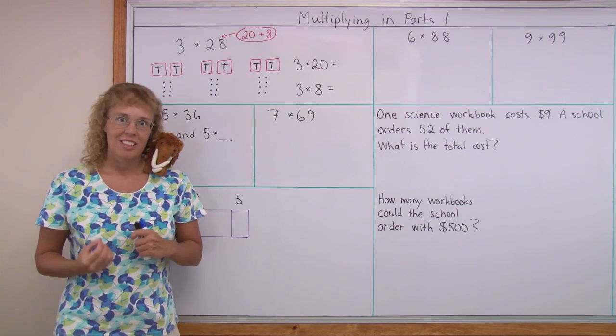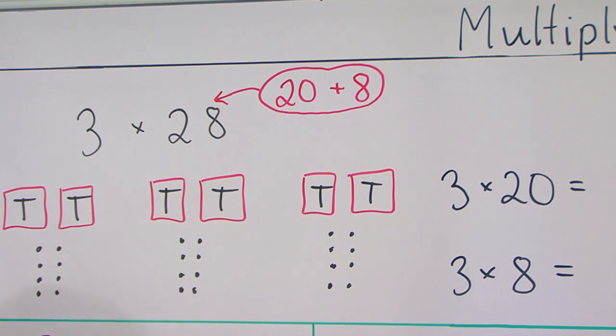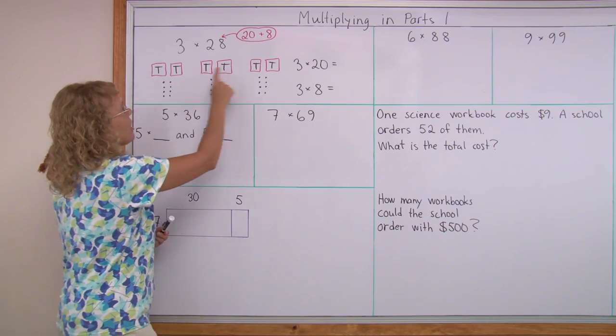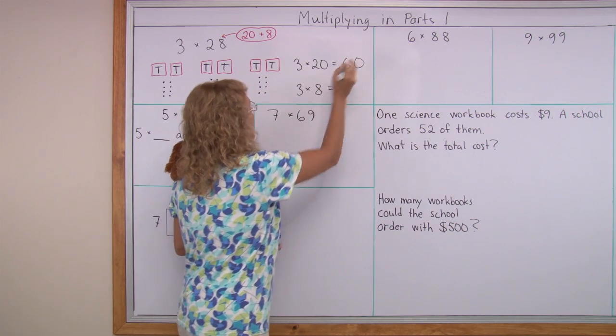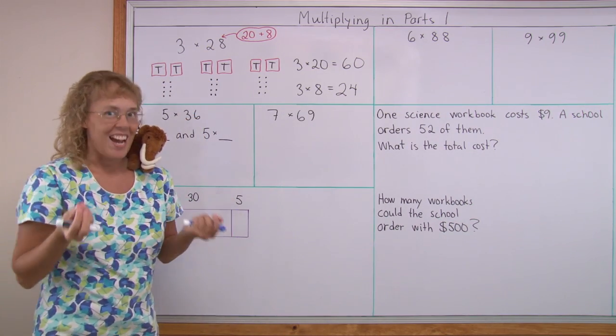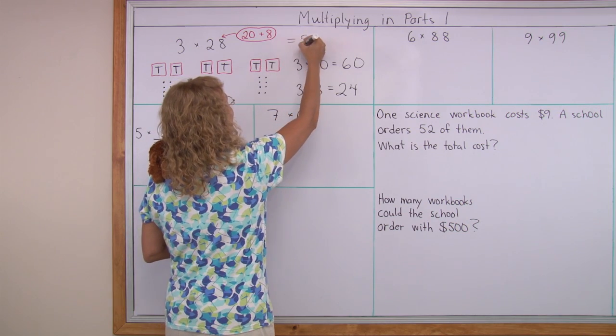The principle is actually very simple. Let's say we have 3 times 28. Think of 28 as being in two parts, 20 plus 8, and then we multiply those parts separately. We will multiply 3 times 20 and 3 times 8. As you see in the picture, I have 28 three times. So I can multiply 3 times 20 and get 60, and 3 times 8 and get 24. And lastly, I have to add those, right? 60 plus 24, so we get a total of 84.